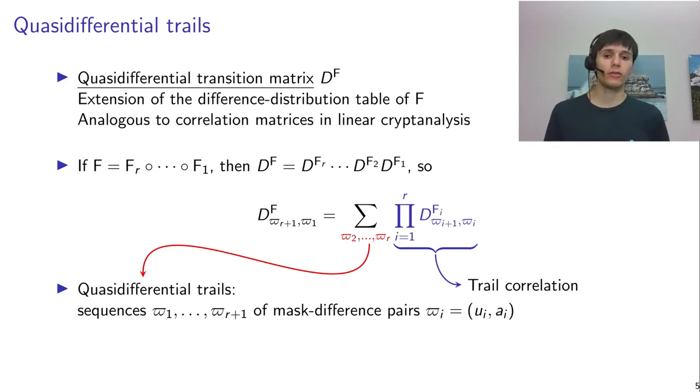And if you express that in terms of the coordinates of these matrices, you get some sum over a certain amount of products. And the terms in this sum are going to correspond to what we call quasi-differential trails, and the things we're summing are going to be the correlations of those trails.